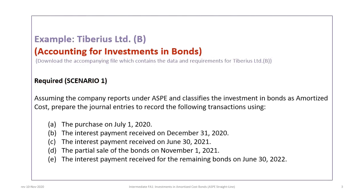This video is based on the Tiberius Limited Scenario 1 requirement. Please make sure you download the correct data and requirements and review them before proceeding. The requirement for Scenario 1 is that assuming the company reports under ASPE and classifies the investments in bonds as amortized cost, we must prepare the journal entries to record the following transactions.